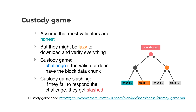The validator who gets challenged must respond with a Merkle proof for the data chunk they were assigned. If the proof is valid, everything is fine. But if the validator fails to respond in time correctly, they will get slashed.